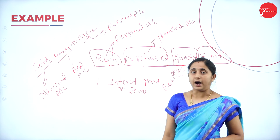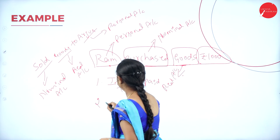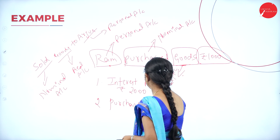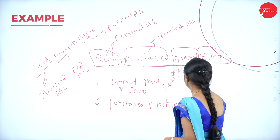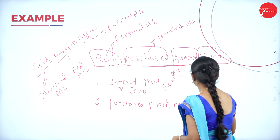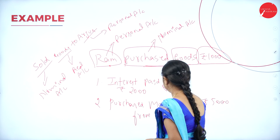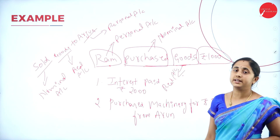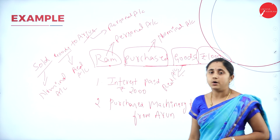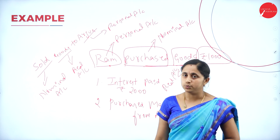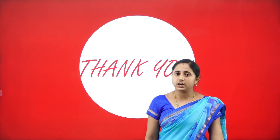Just I will give you one homework: interest paid rupees 2000 — identify the items and classify them under personal account, real account, and nominal account. This is the homework for you. This is all about today's session. Let us meet in the next session with journal entries and financial accounting process. Until then, keep watching. Thank you.